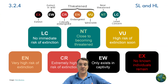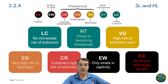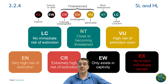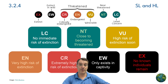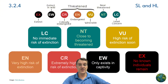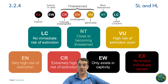The IUCN Red List uses color-coded categories to classify species based on their risk of extinction. This system creates a standardized way to communicate how threatened a species is. The categories range from least concern in blue-green to extinct in black, with increasing levels of threat as we move through the spectrum. These classifications help conservationists decide where to focus their limited resources and track how species are responding to protection efforts.